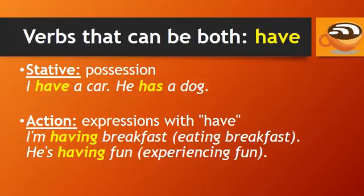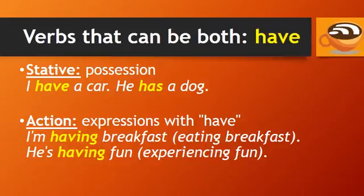'Have' can also be both a stative verb and an action verb. It's always stative with possession. For example, 'I have a car,' 'He has a dog.' But in certain expressions with 'have' that do not involve possession, 'have' is an action verb. For example, 'I'm having breakfast,' meaning eating breakfast. Or, 'He's having fun,' meaning experiencing fun. In these cases, 'have' is an action verb and it can be used in continuous form.